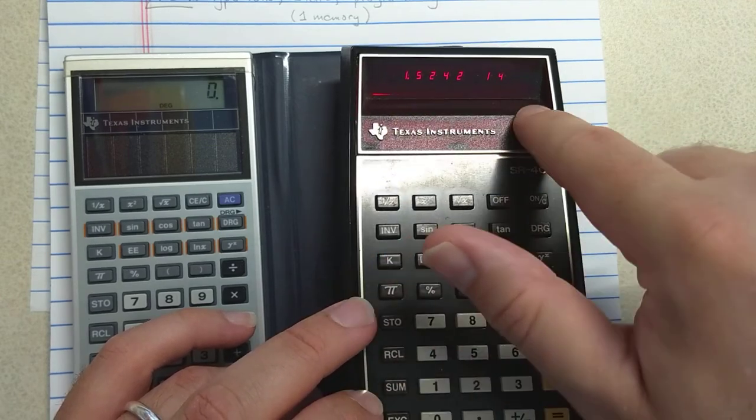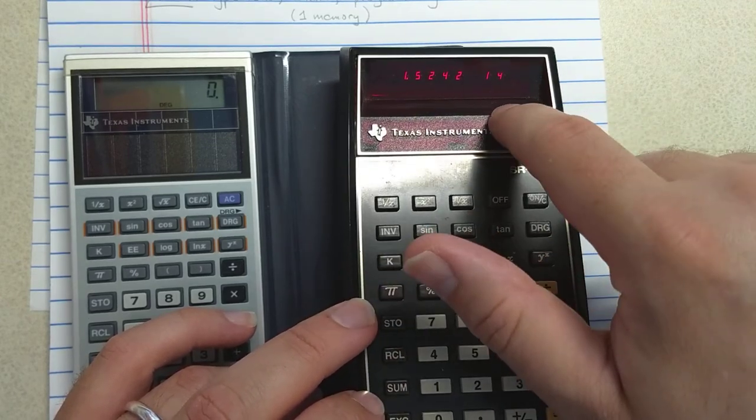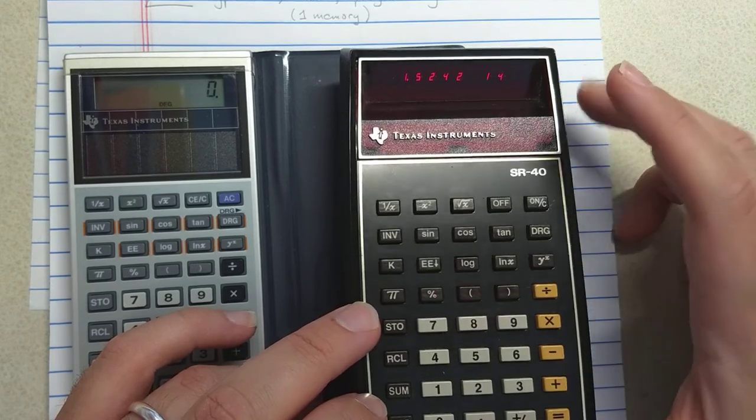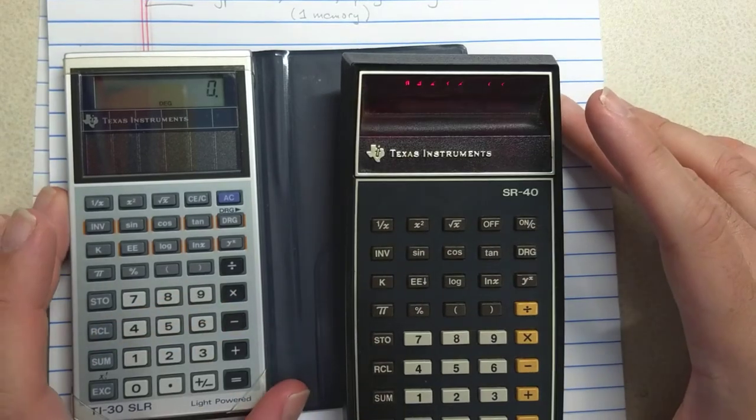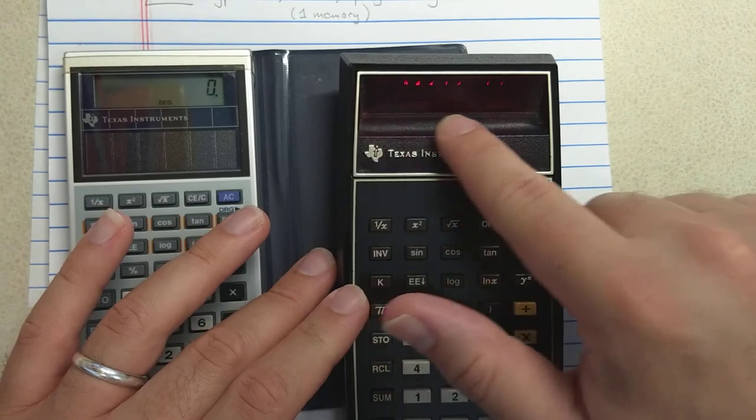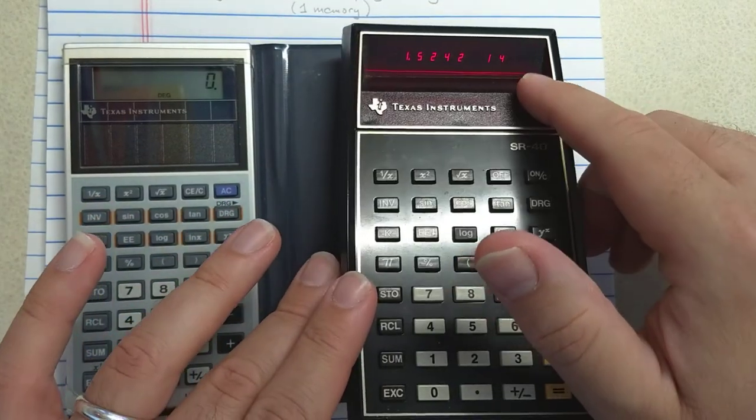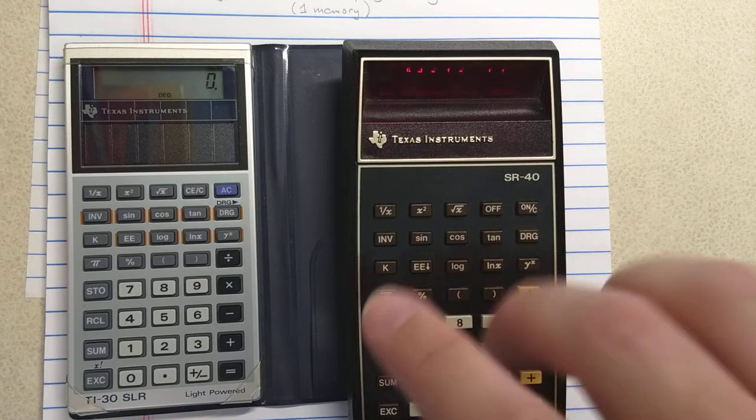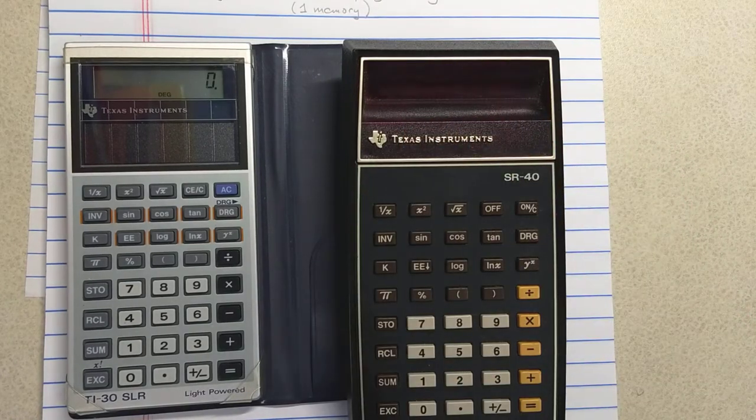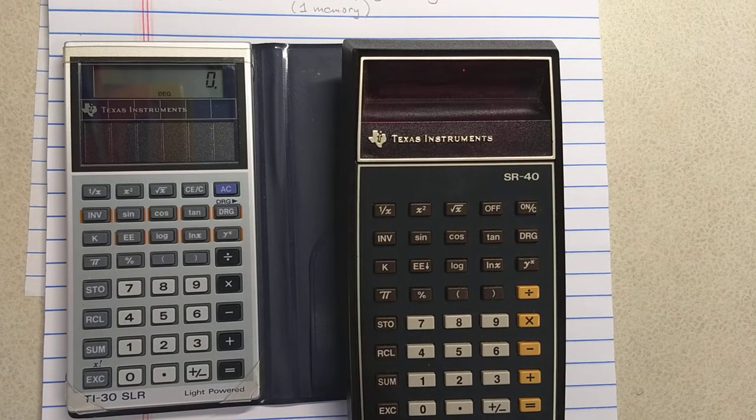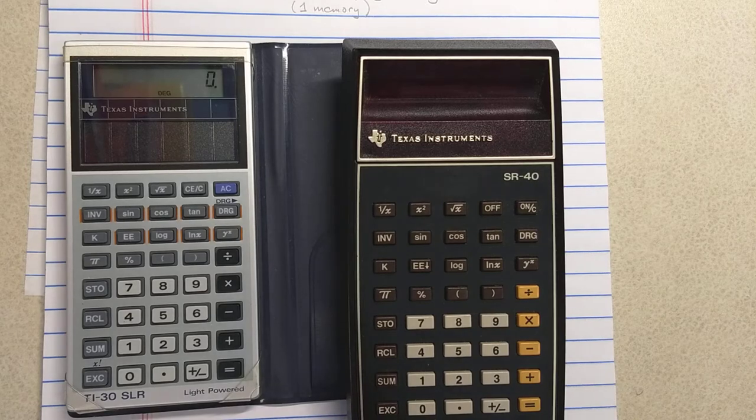So compare this number to the number I got on the HP-35 video. Okay, the HP-35, it will still show eight significant digits plus the two-digit exponent. But five significant figures is more than enough for most applications and is better than you will get on most slide rules.